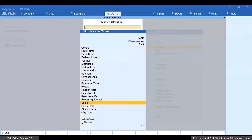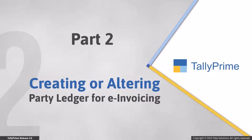Similarly, you need to enable e-invoicing for point of sale, credit note, debit note, and receipt voucher types. Now let's see how to create or alter a party ledger for e-invoicing. You can specify the necessary details in a party ledger at the time of either voucher creation or voucher alteration.